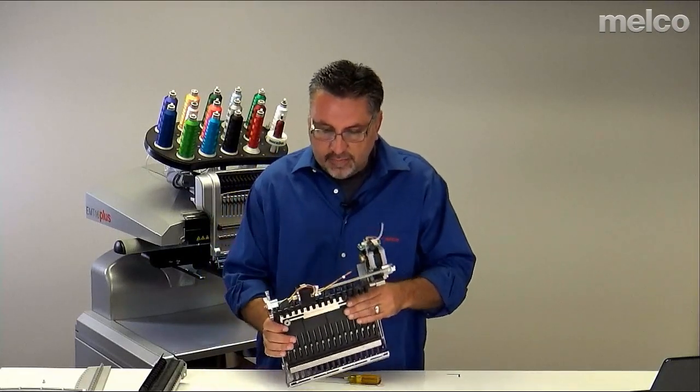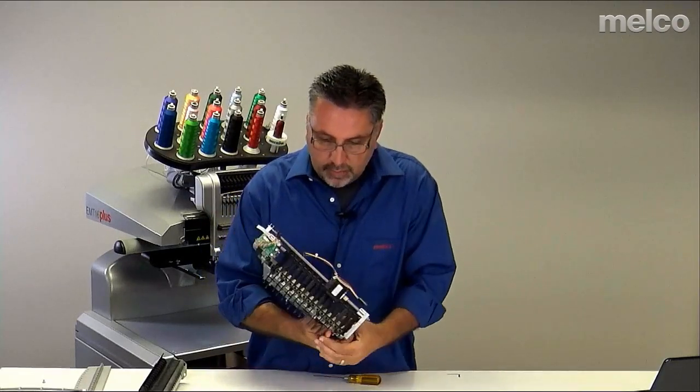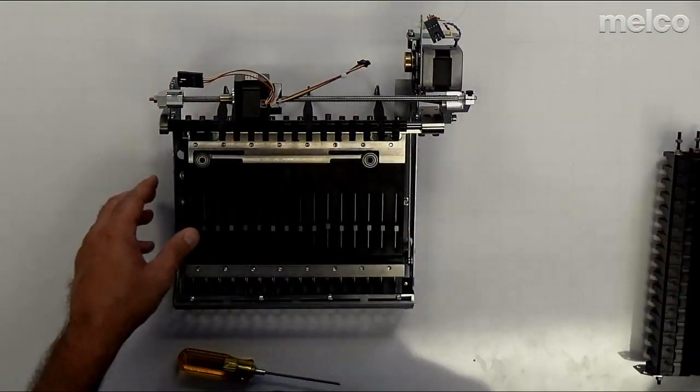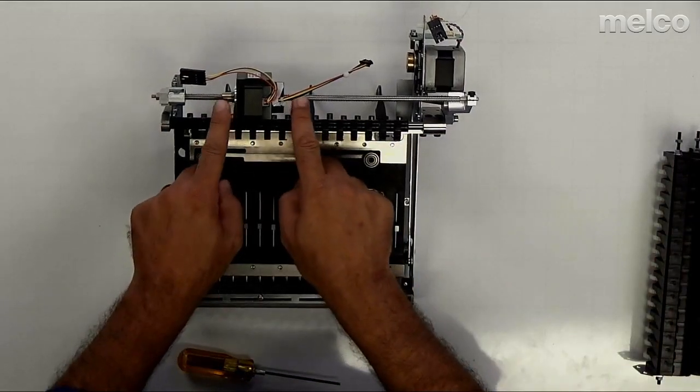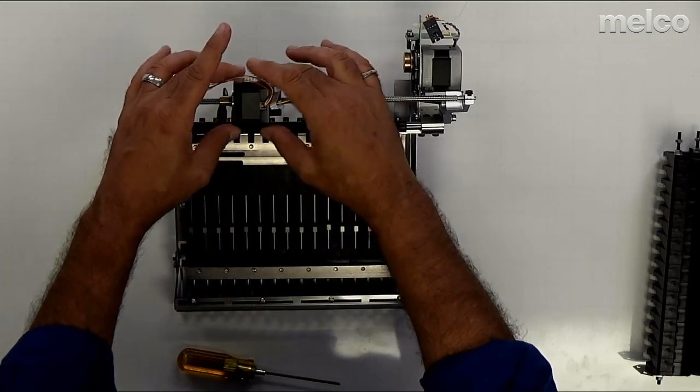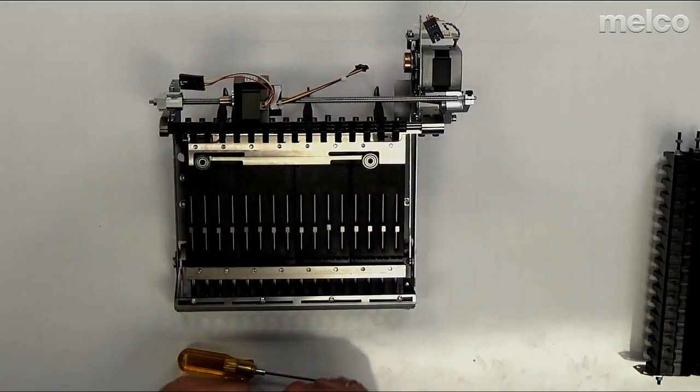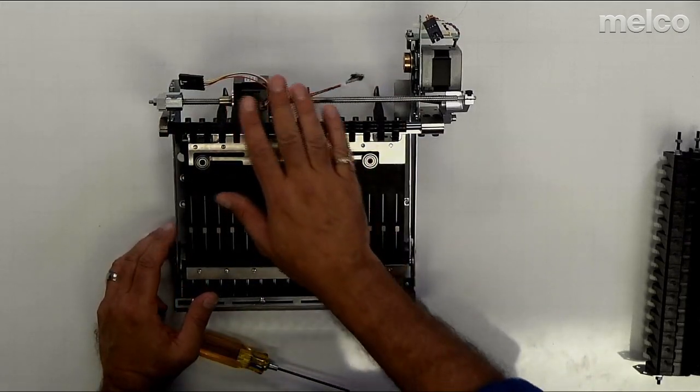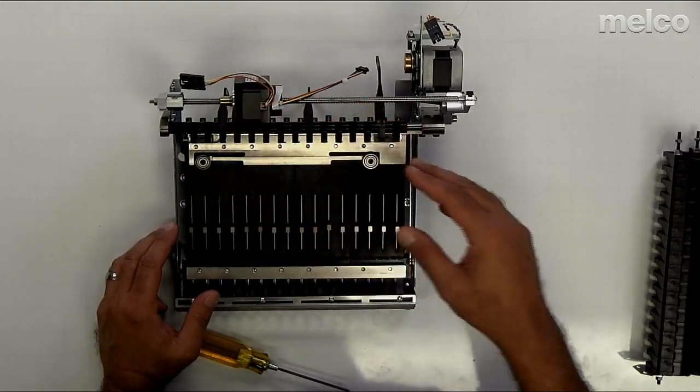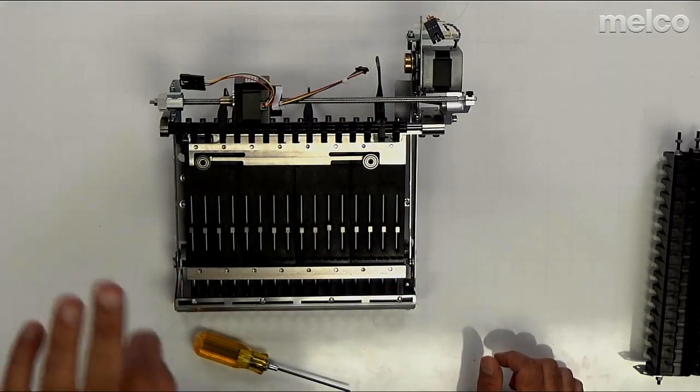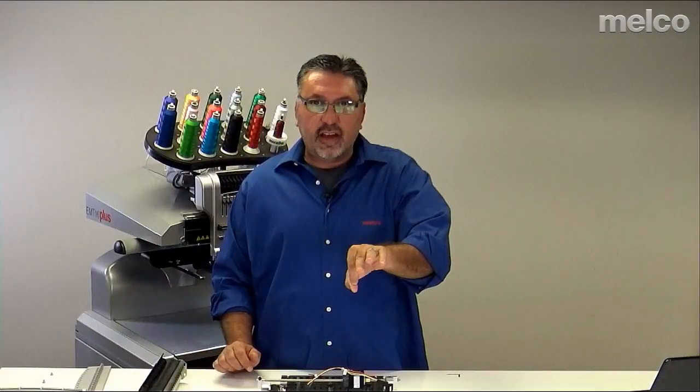If we flip this guy over, you can see the color change lead screw running left and right right here. This black square assembly in the middle is the color change motor. So the best way to think of how this works is, think of a nut and a bolt sideways.